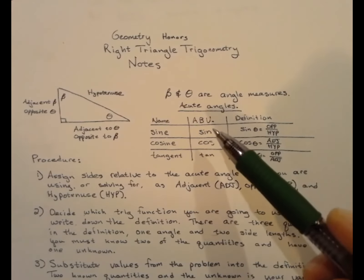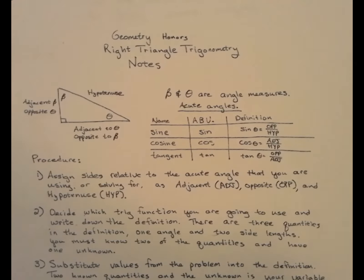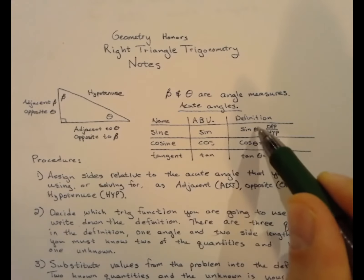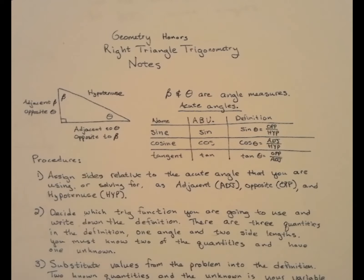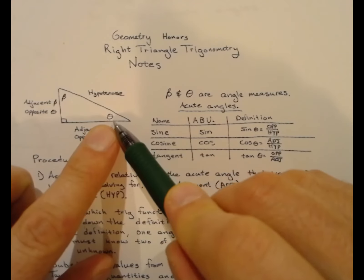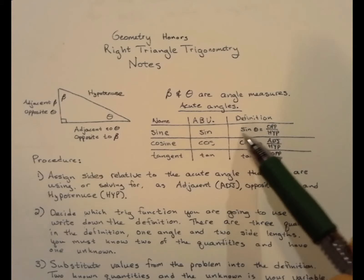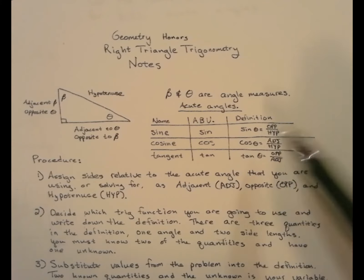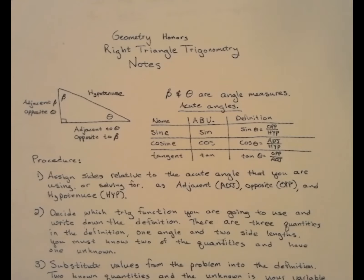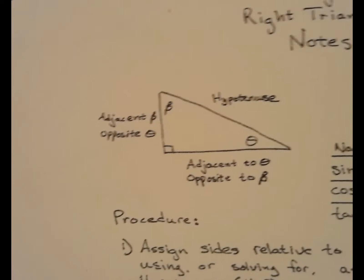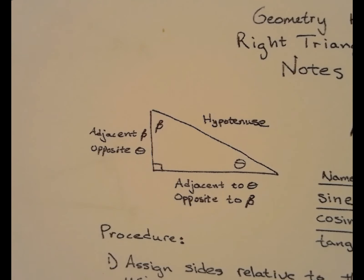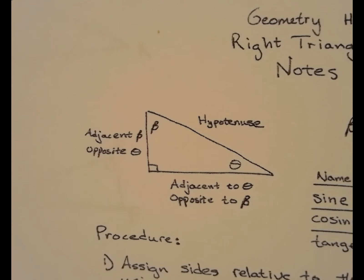For right triangle trigonometry, each of these trig functions is a function of an acute angle. I label the two acute angles theta and beta. The trig function of some acute angle always equals a ratio of side lengths relative to that acute angle. The ratios involve the words opposite, adjacent, and hypotenuse.